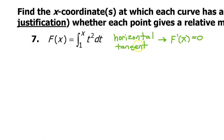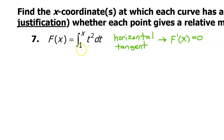Remember that a horizontal tangent line will occur where the derivative is equal to zero. So our strategy will be to find the derivative of this function and set it equal to zero.